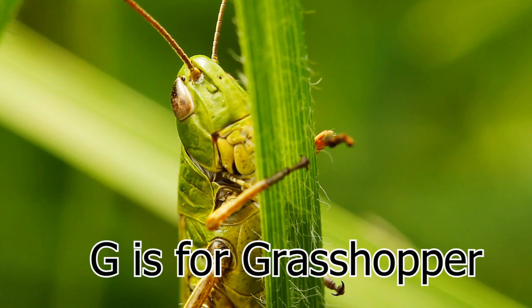G is for grasshopper. Grasshoppers have ears on their abdomen and have five eyes.